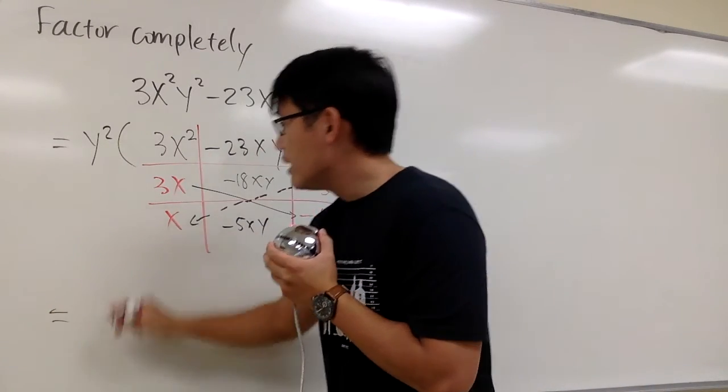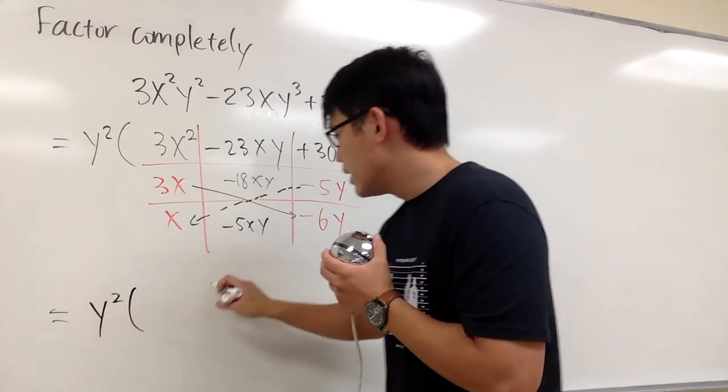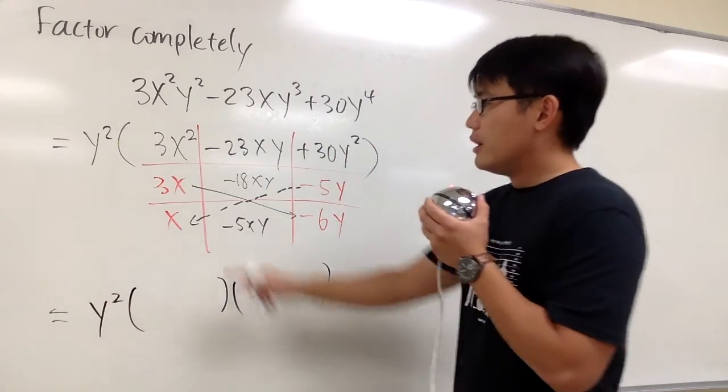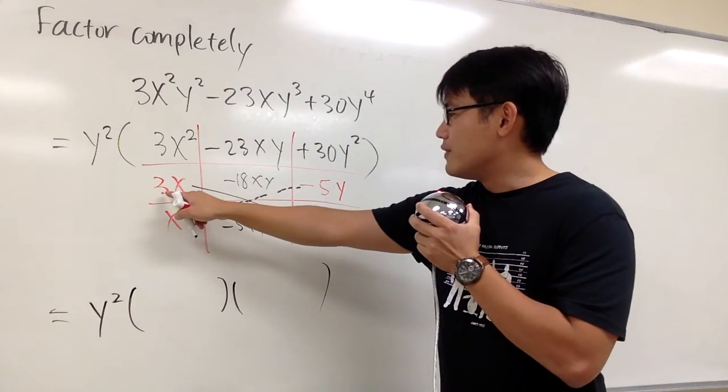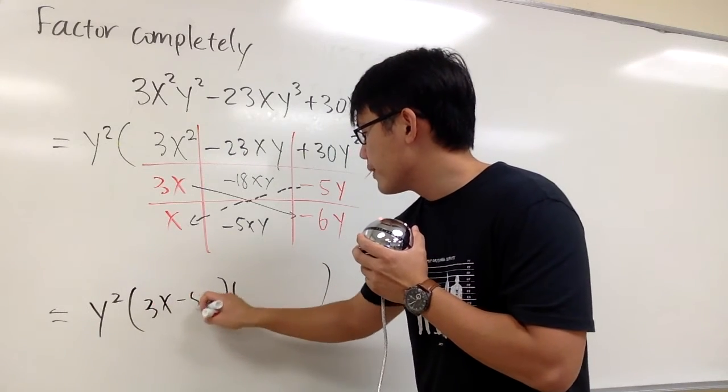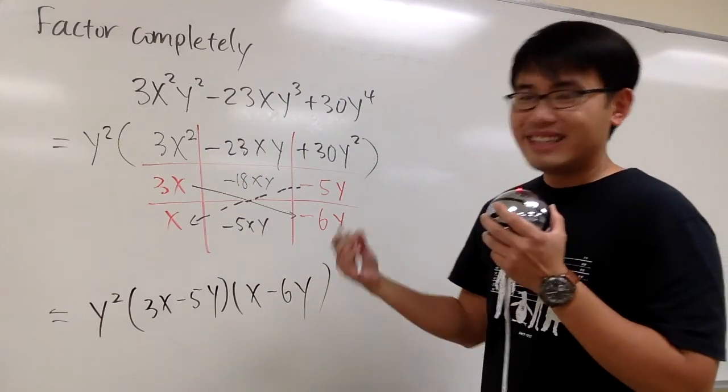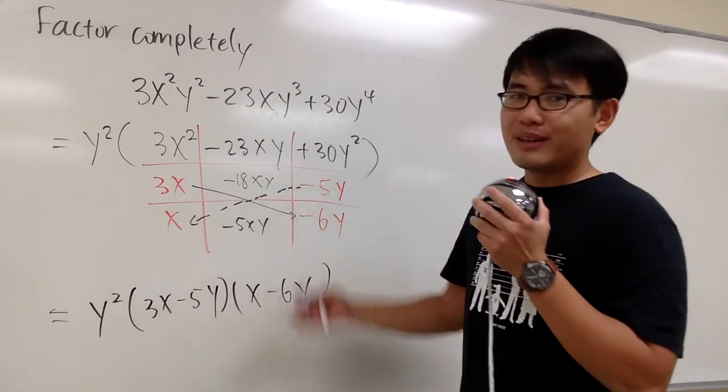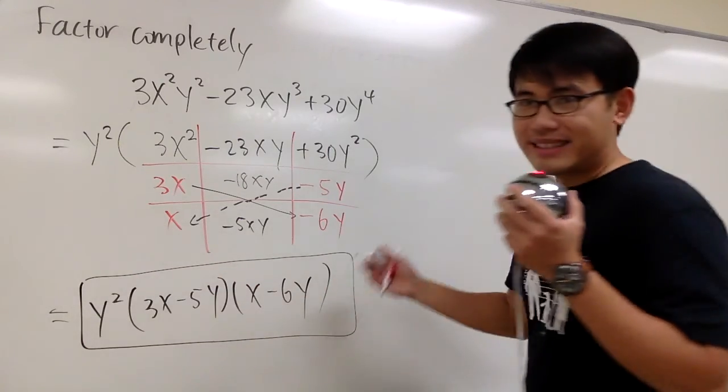And that means at the end, you still keep the y² though. We have the y² all the way in the front. And we have two parentheses. And when we read the answer, don't forget we read it across. So we have the first factor, 3x minus 5y in these parentheses. And then x minus 6y in the second parentheses. And all this will be the factoring for this. And that's it.